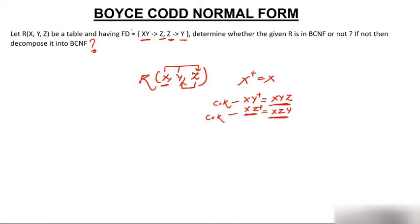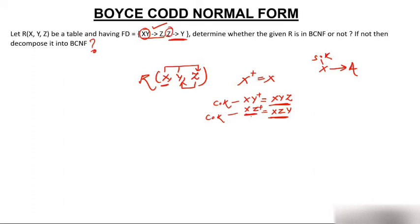Now check whether the functional dependencies satisfy BCNF. BCNF requires that for every non-trivial FD X → A, X must be a super key. Check XY → Z: is XY a super key? Yes, XY is a candidate key, so this is in BCNF. Check Z → Y: is Z a super key? No — Z alone is not a super key (XZ is, but Z alone is not). So this FD violates BCNF, meaning the table is not in BCNF.